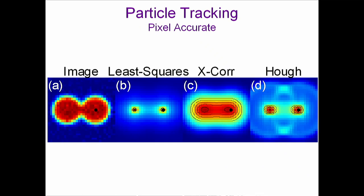Just to compare three popular types of particle tracking: least squares fitting as I've described, plain cross-correlation where you find the largest value, and the Hough Transform. These are all shown at the same scale. In the least squares approach, you get the exact point as close as possible.